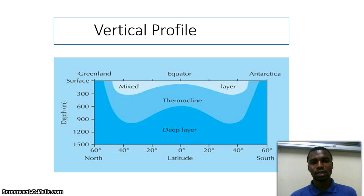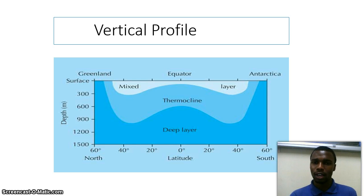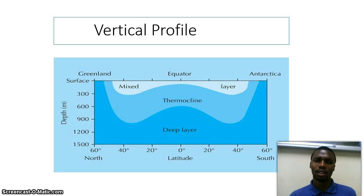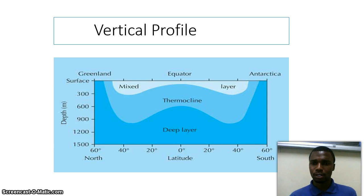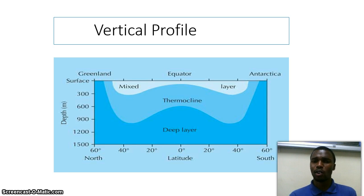This is the vertical profile of the ocean. When you take an ocean and slice it in half and put it sideways, this is what you will see. First of all, you have the mixed layer, and then you have the thermocline, and also the deeper layer, which is much colder compared to the mixed layer. The mixed layer is about 100 meters, and then the deeper layer is about 1 to 2 kilometers. We use such models to describe the vertical profile of the ocean.